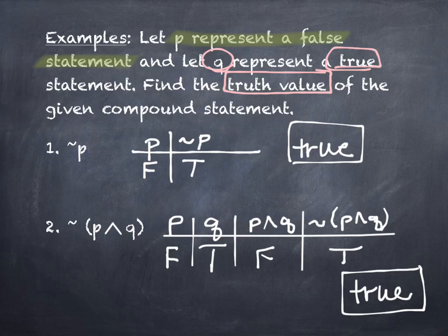Truth values have the feature where you're told at the beginning whether each individual statement is true or false, and then you combine them in a one-line truth table to get a final result. The final result says T or F — T for true, F for false.